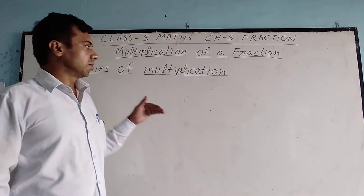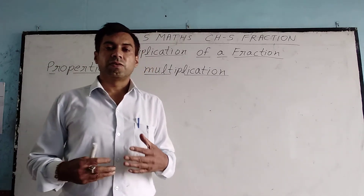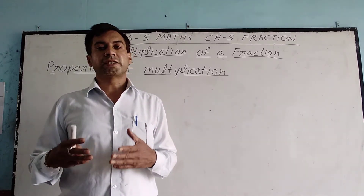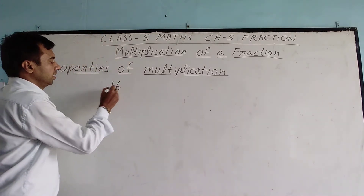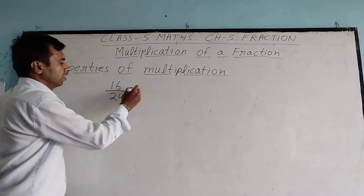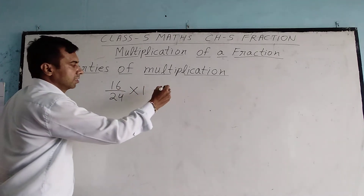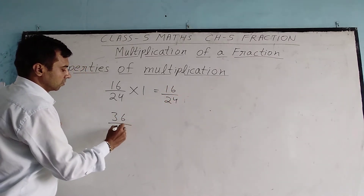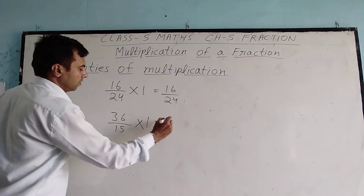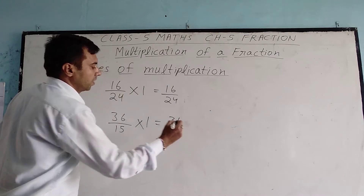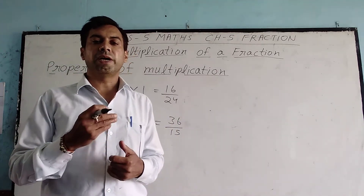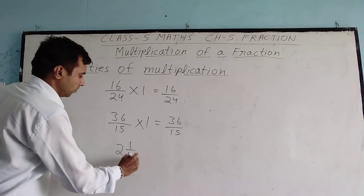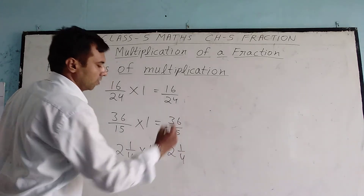First I will explain properties of multiplication. First property: any fraction multiplied by 1, we get the fraction itself. For example, 16 by 24 multiplied by 1 gives 16 by 24. Also, 36 by 15 multiplied by 1 gives 36 by 15. And 2 and 1 by 4 multiplied by 1 gives 2 and 1 by 4 itself.